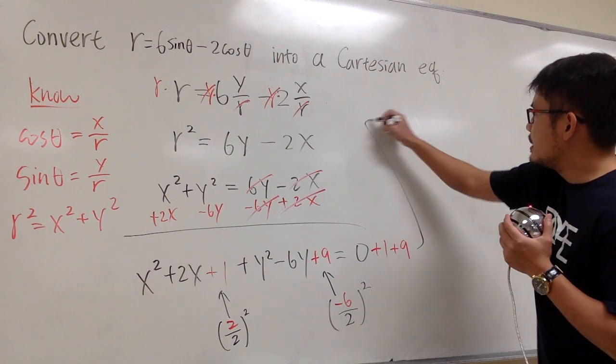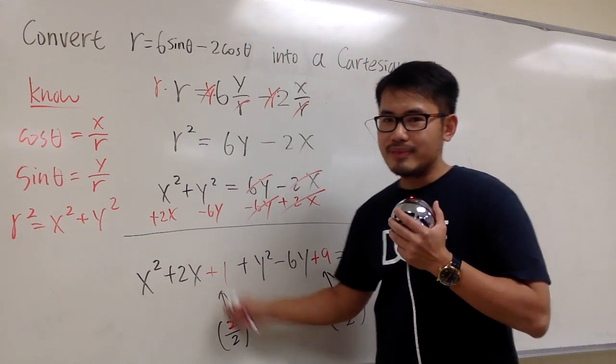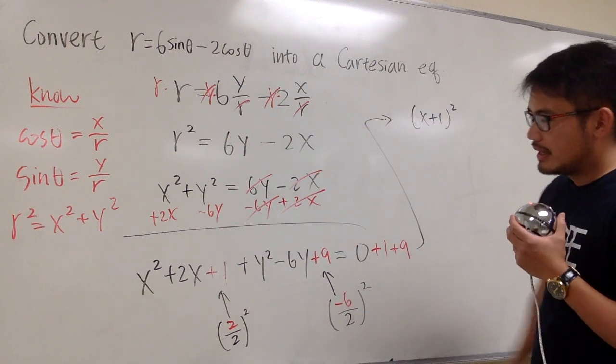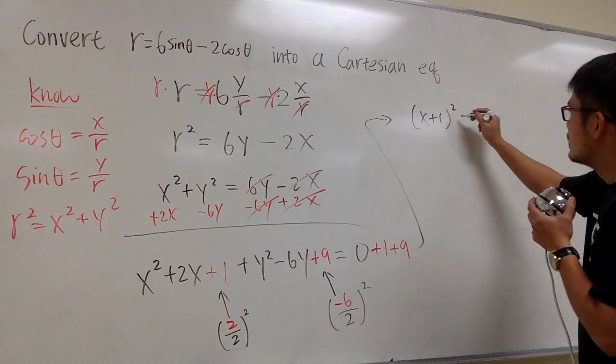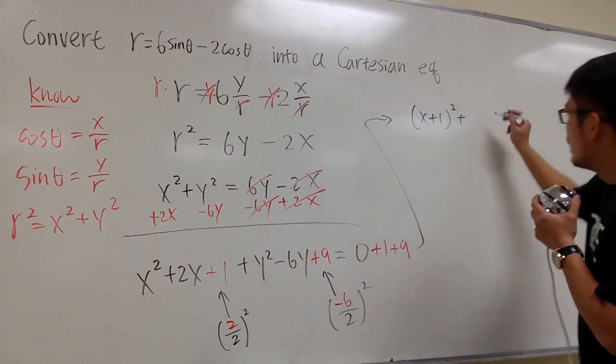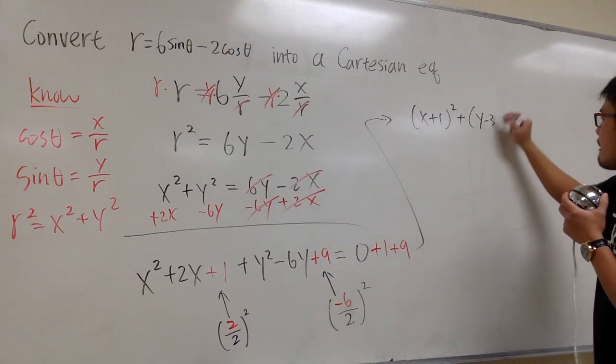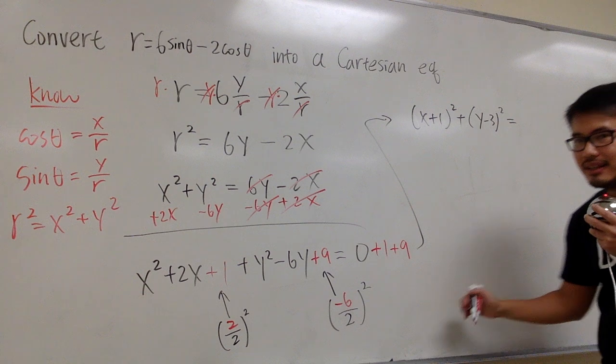Alright, so now let me continue right here. This is a perfect square. x plus 1 squared. This is now also a perfect square. So we add y minus 3 squared. And on the right-hand side, 1 plus 9 is 10.